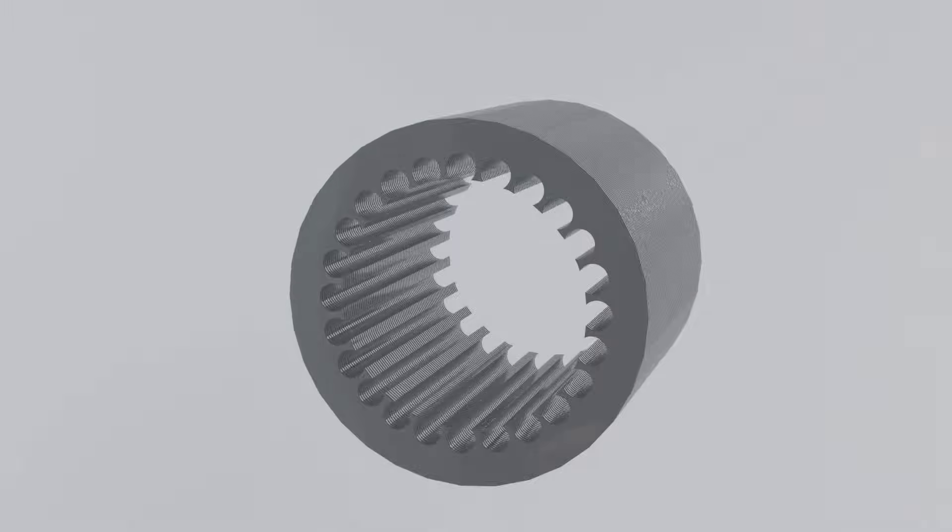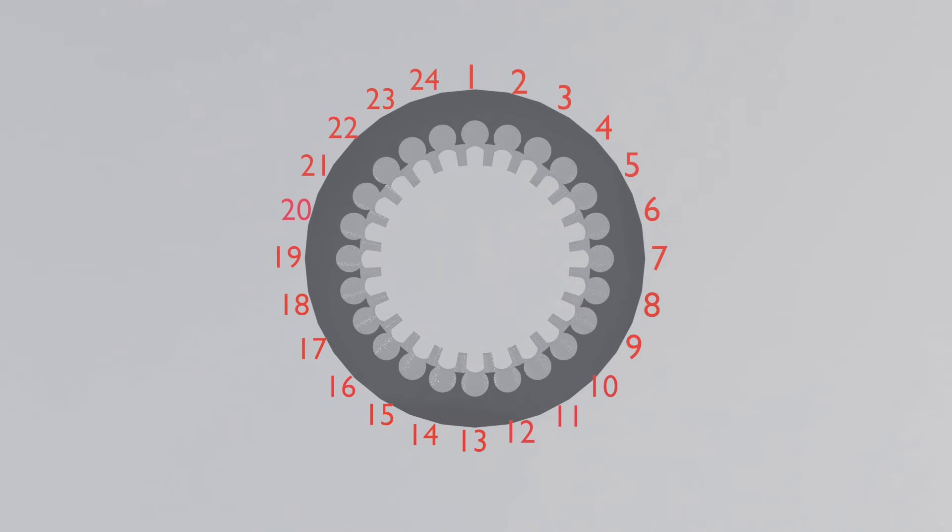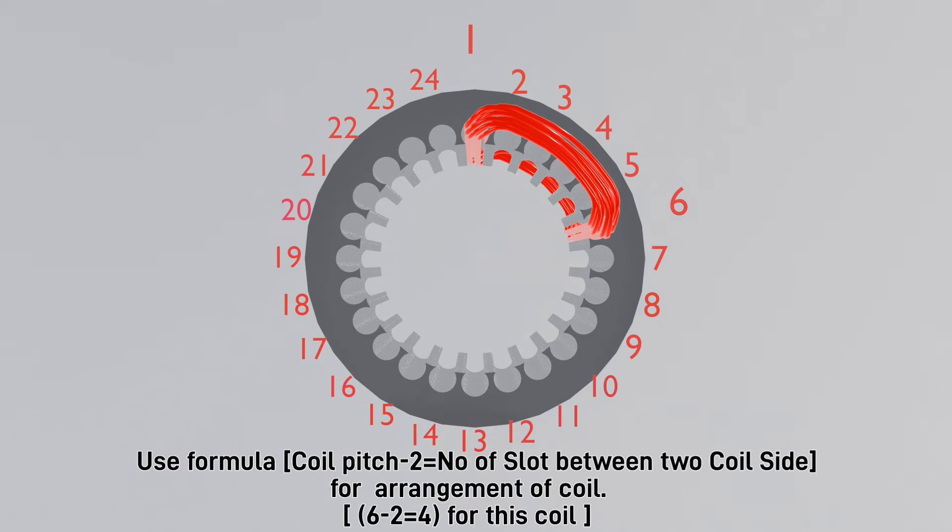Let's insert the winding in the stator core. We insert the first coil of R phase in slots. You see that one side of the coil is in slot 1, and the other side of the coil is in slot 6, because the coil pitch is 6 for this winding.